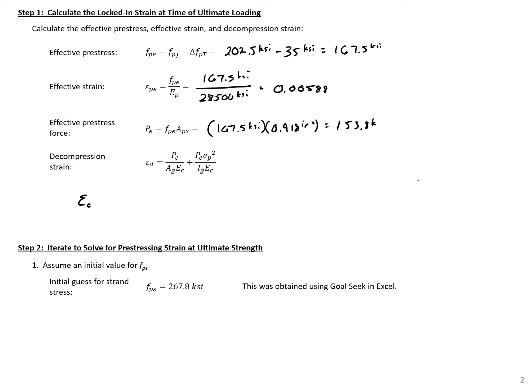So our epsilon D here, our decompression strain, is going to be 153.8 kips divided by 360, our gross area times our concrete stiffness, 4,415 KSI, plus 153.8. Our strand eccentricity squared, 9.8 squared,